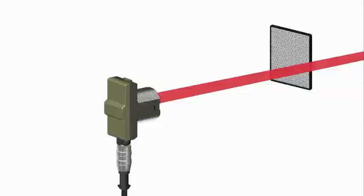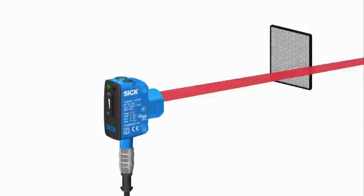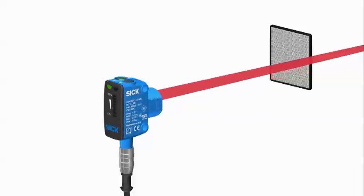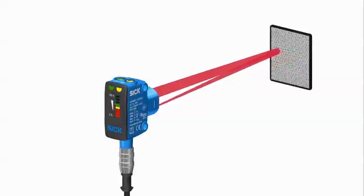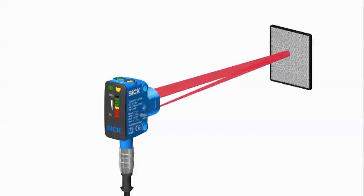The SureSense signal strength light bar provides instant feedback to help you optimize alignment and maximize signal strength in your application. This increases stability when contamination or misalignment occurs, factors that can be challenging for traditional sensors.